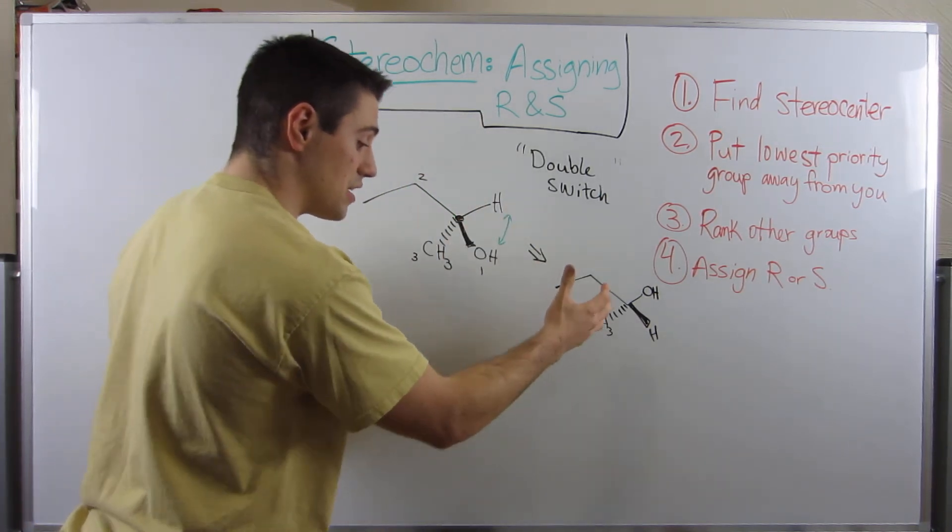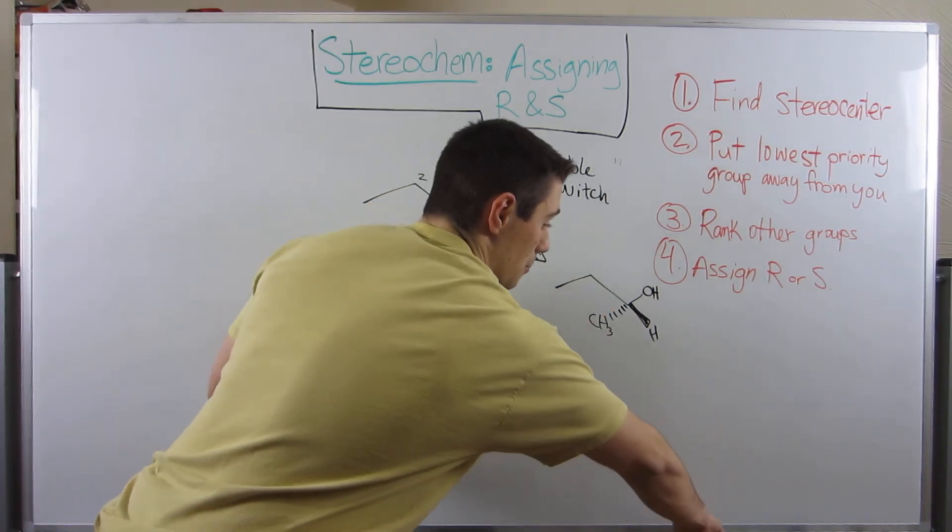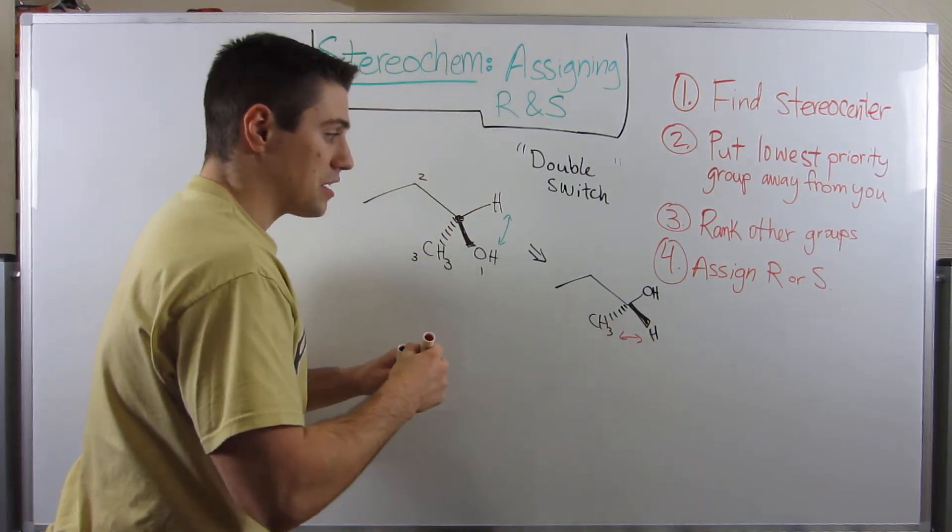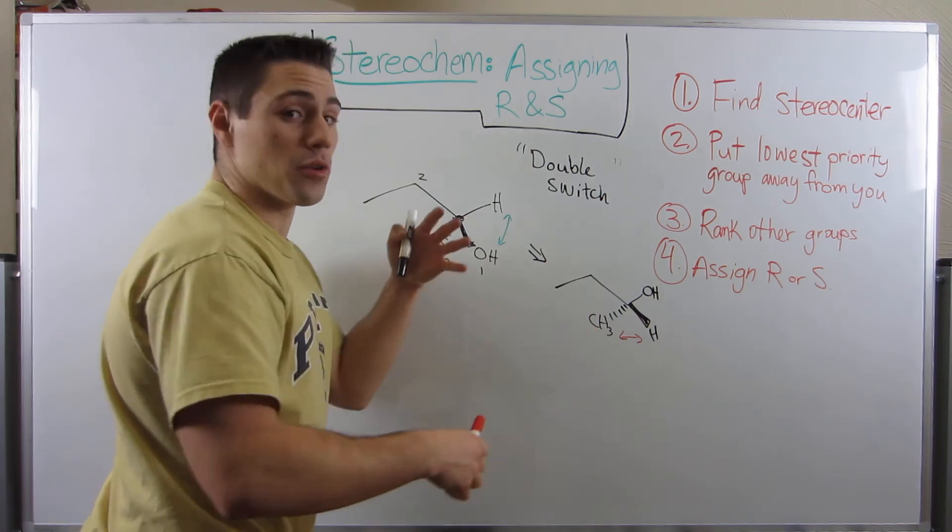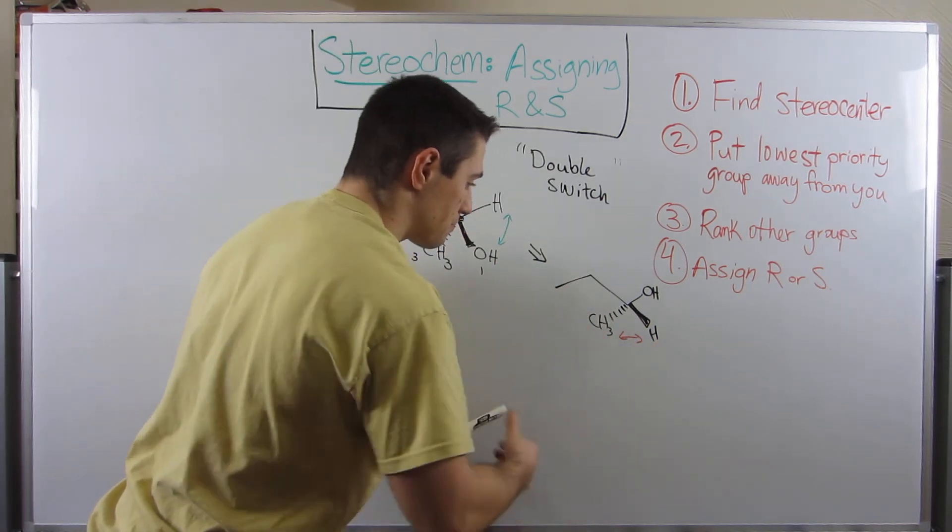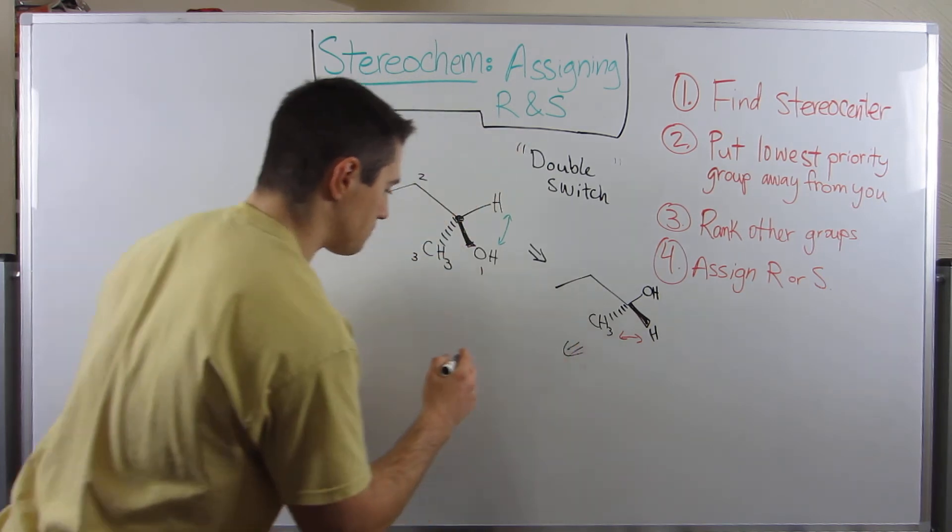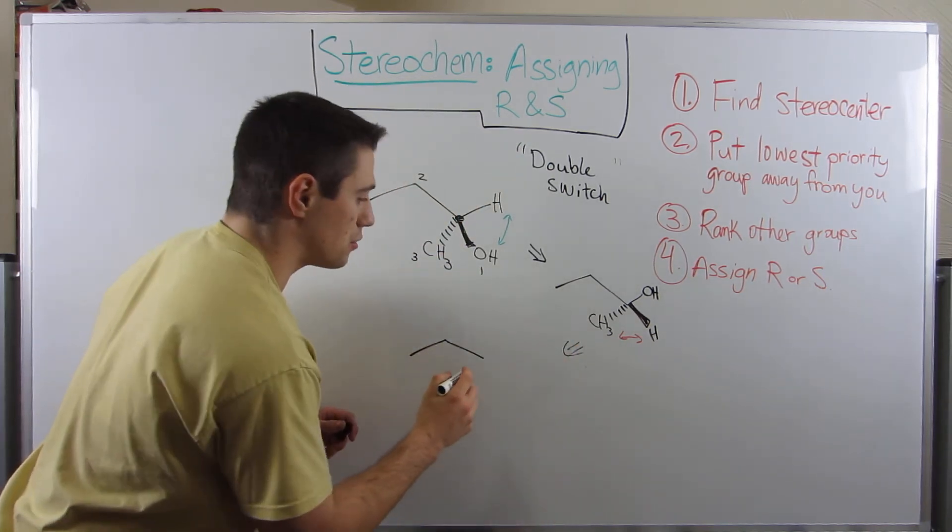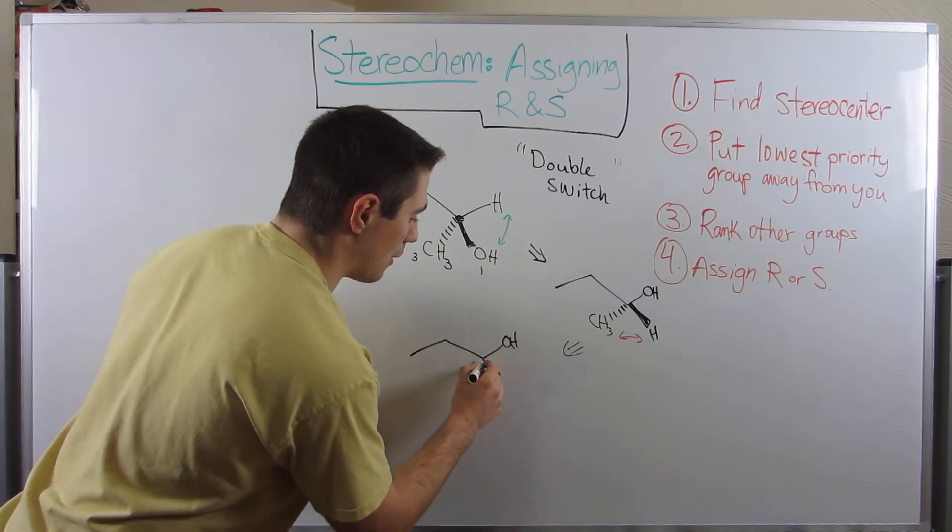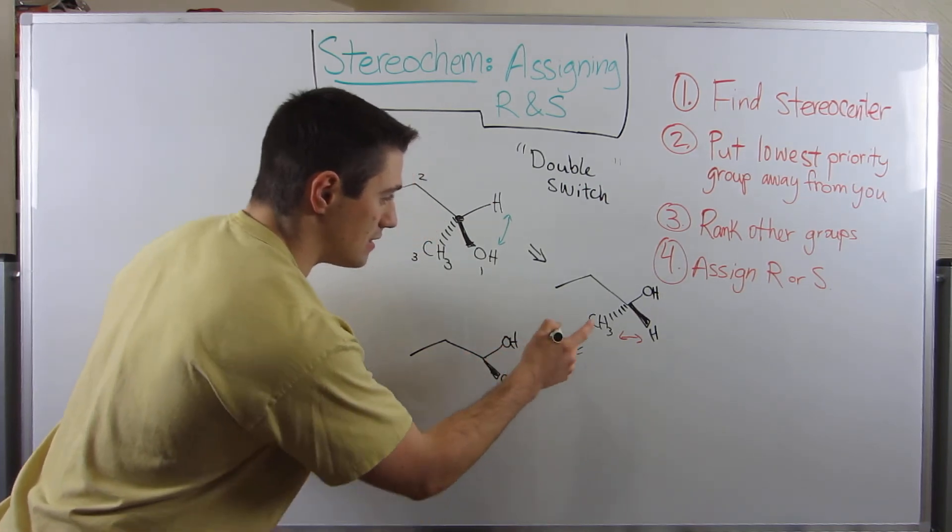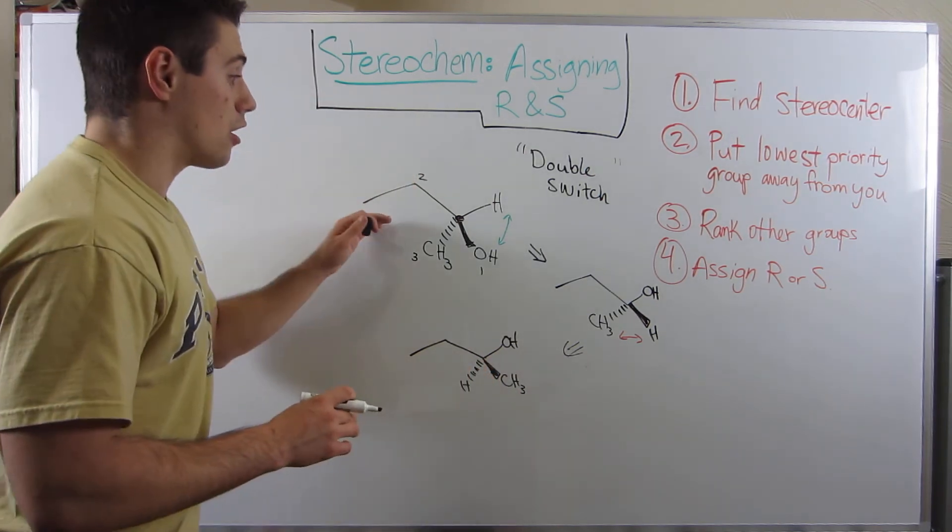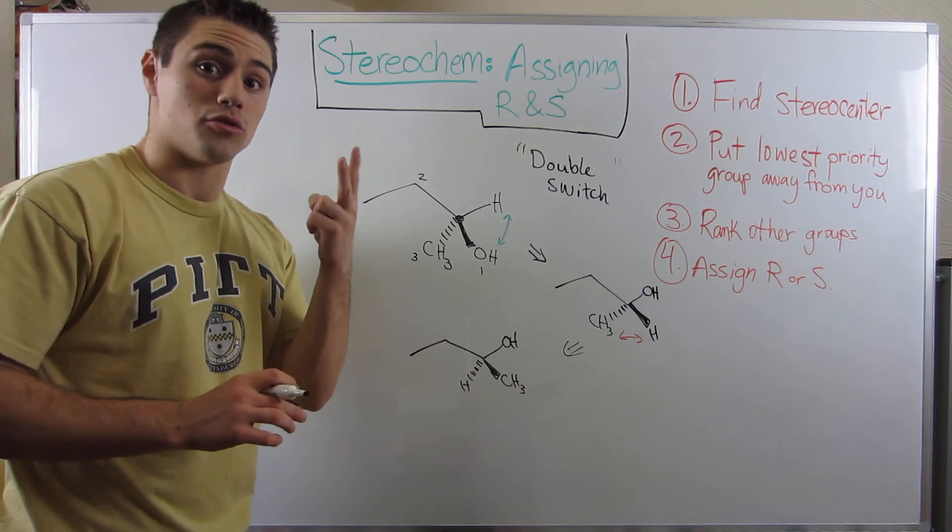However, we've now inverted the stereochemistry, so we need to flip one more time. Let's flip the H and the CH3 because that also gives us back the original stereochemistry and puts the H as a dash. So let's kind of go this way. Didn't touch the ethyl group. OH stayed the same. The wedge is now a methyl group. And the dash is now a hydrogen.